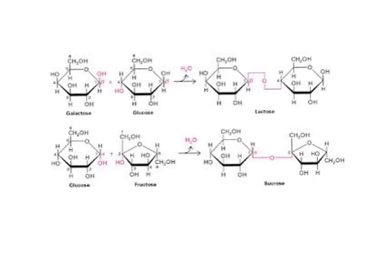If we combine glucose with its isomers, we get other disaccharides. If we take galactose and glucose together, we get lactose — the sugar present in milk. Some people are lactose intolerant because they lack the enzyme to break the 1,4 glycosidic linkage between glucose and galactose. If we put glucose and fructose together, we get sucrose — table sugar. These are pretty common disaccharides you encounter in everyday life.